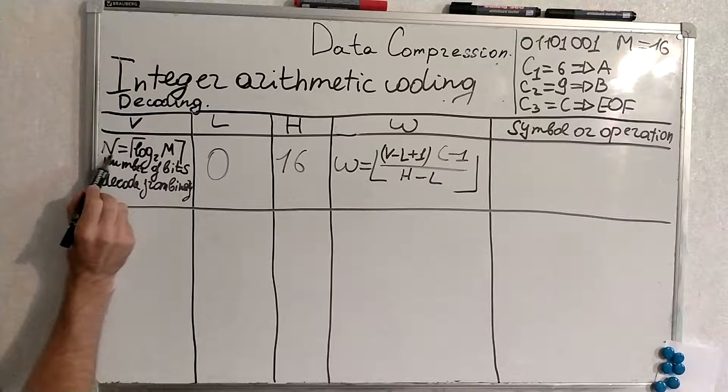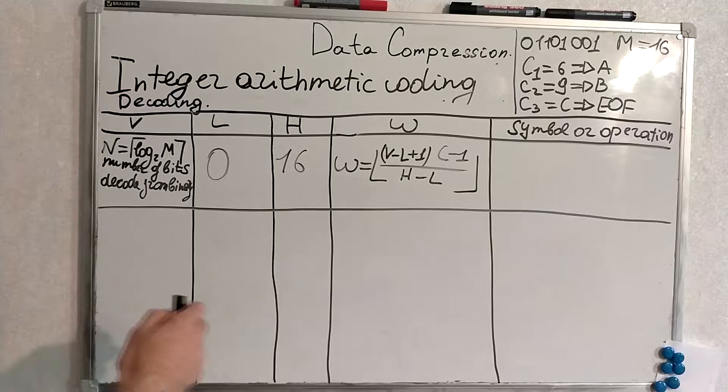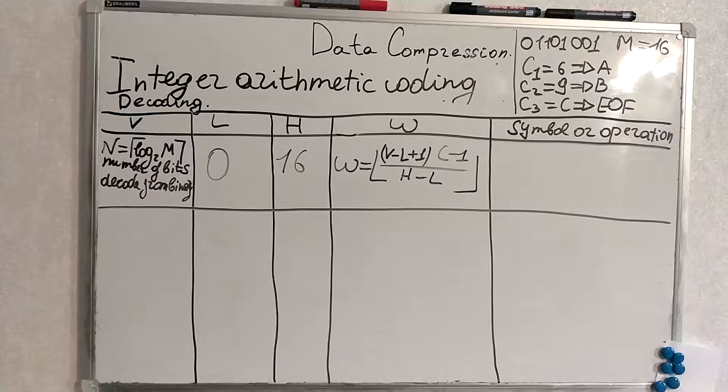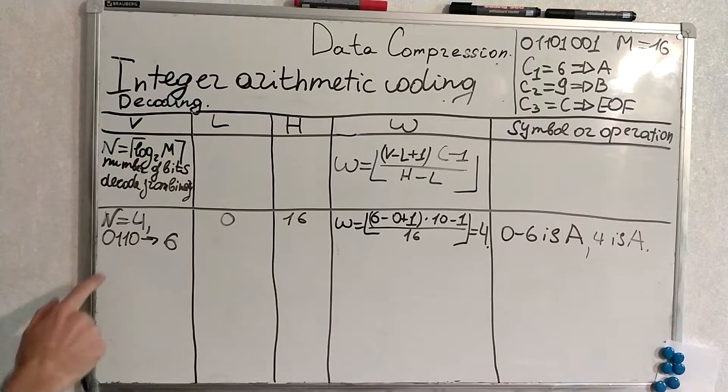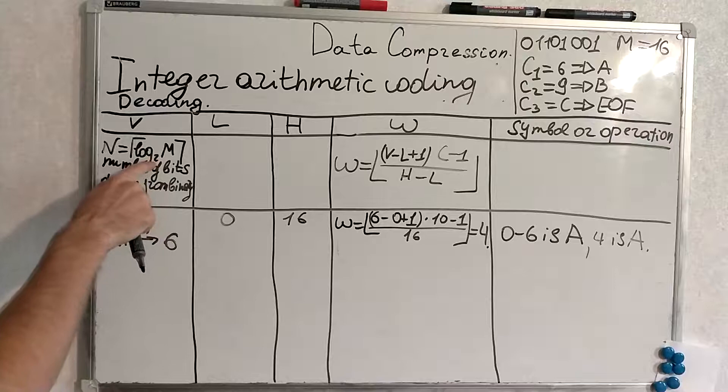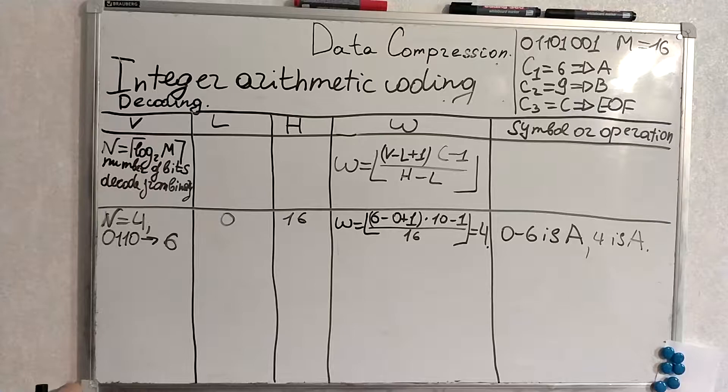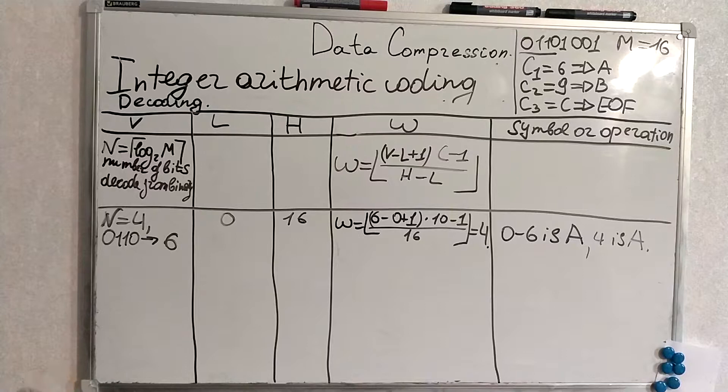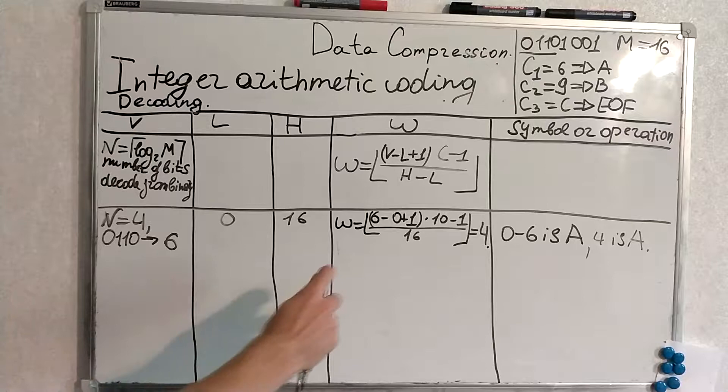Here there is no need to really understand what is v and what is w we will just use the formulas and plug in numbers. First we calculate v so n for v will be 4 according to this formula 2 to which power is m. m is 16 so it's 4 thus we use first four bits.